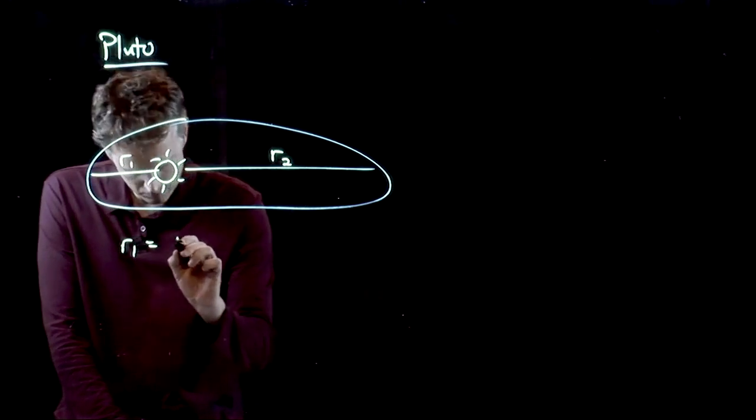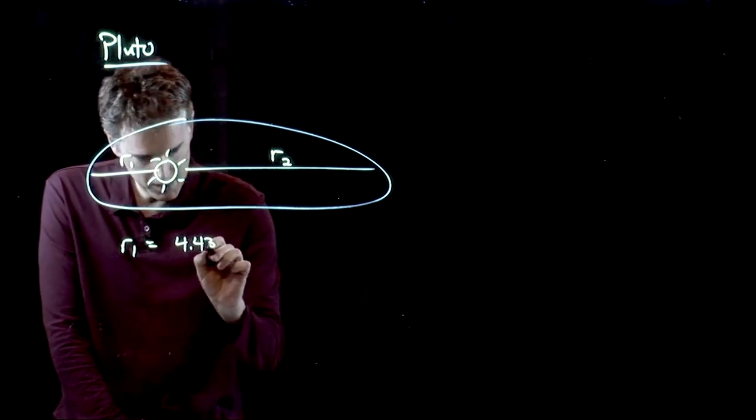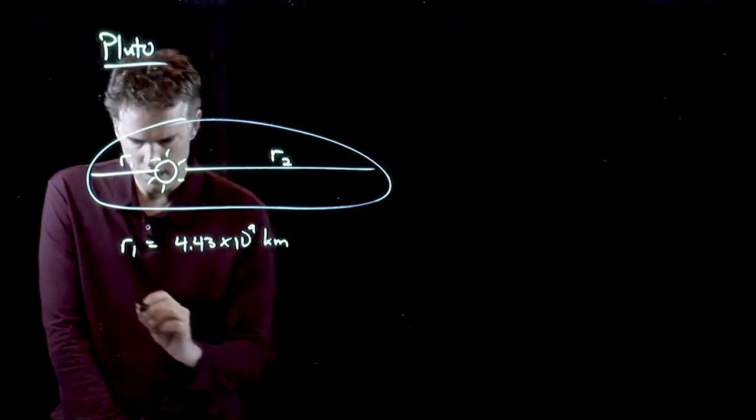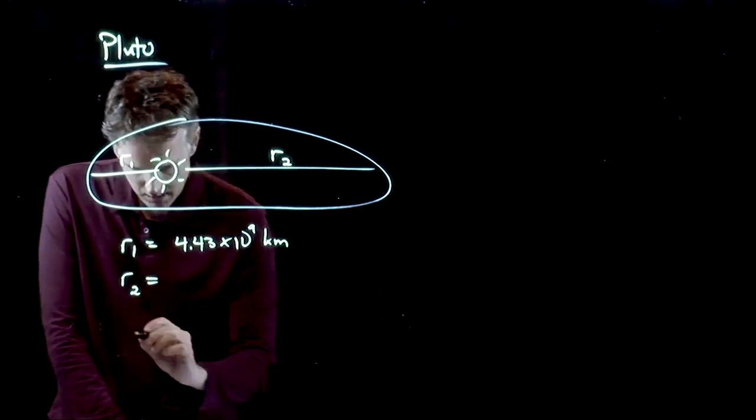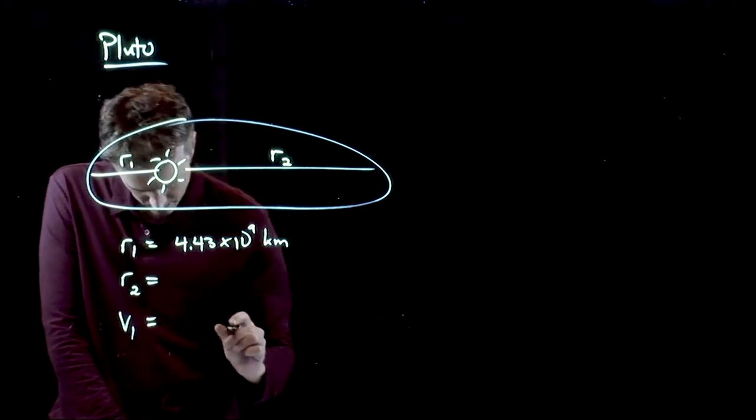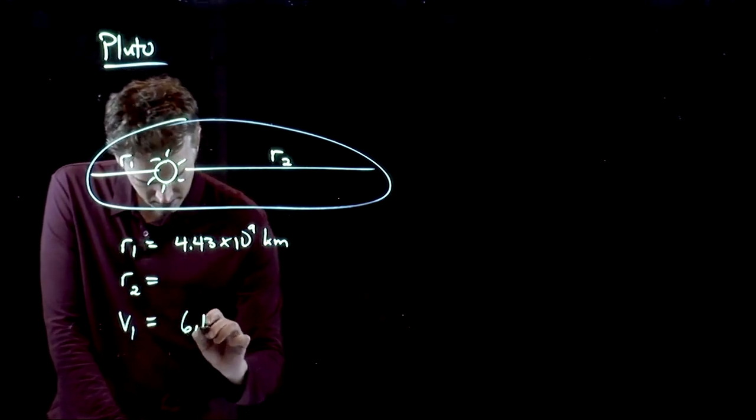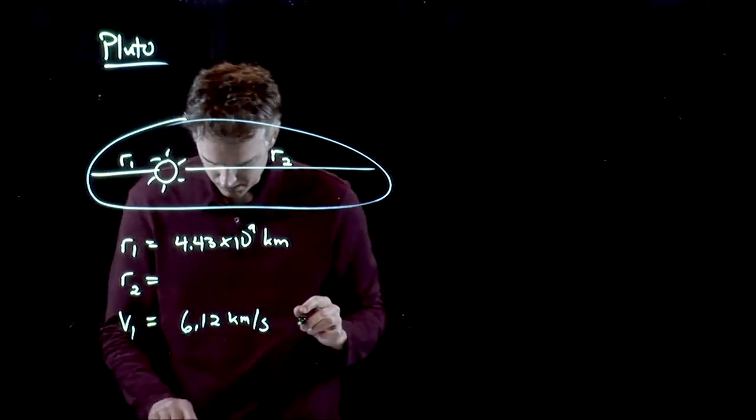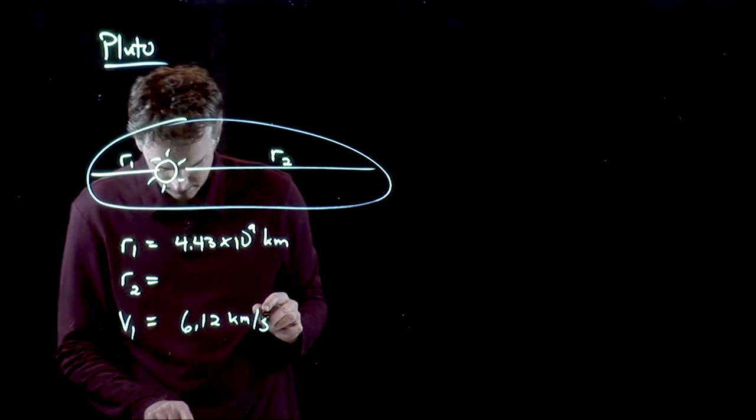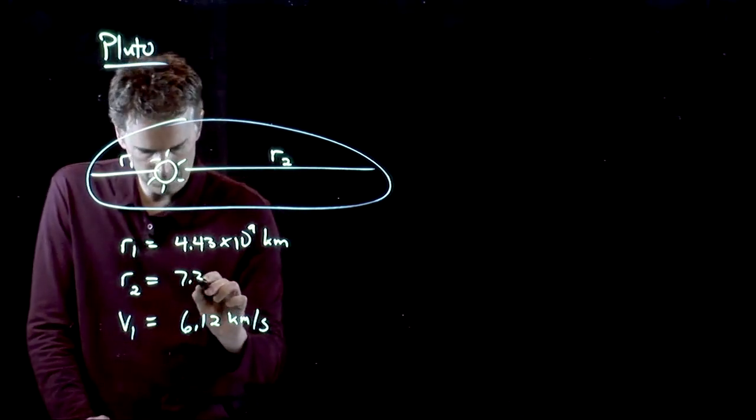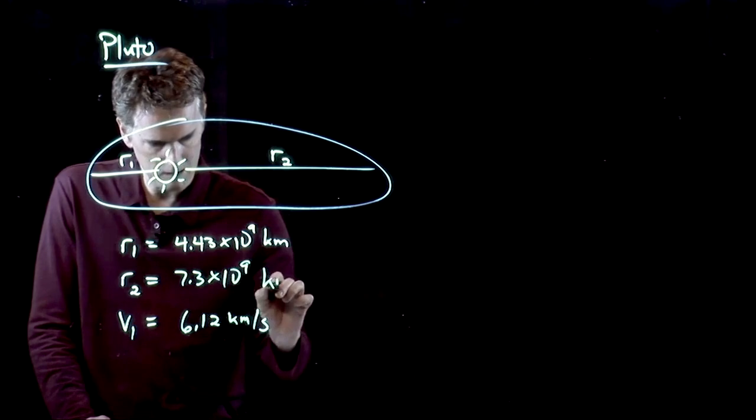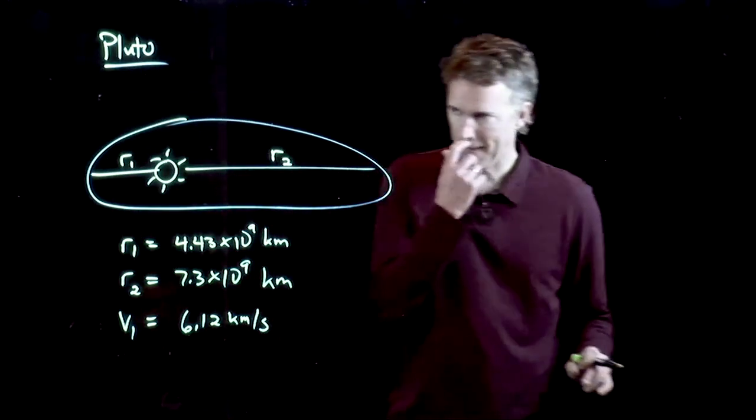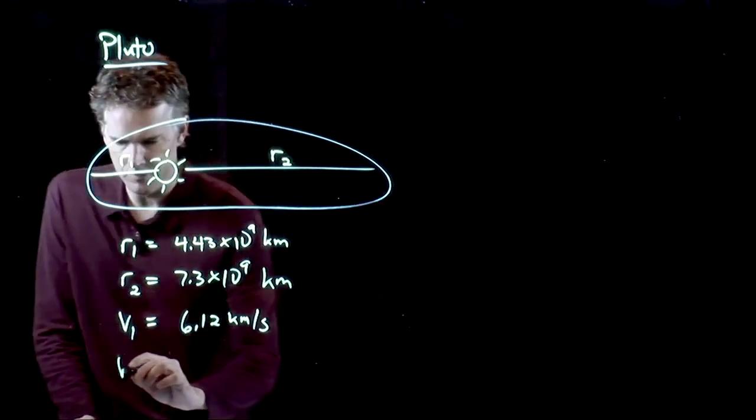R1 equals 4.43 times 10 to the 9 kilometers. R2 is something else. I'll give it to you in a second. V1 is 6.12. R2 is 7.3 times 10 to the 9 kilometers. And we want to figure out what V2 is.